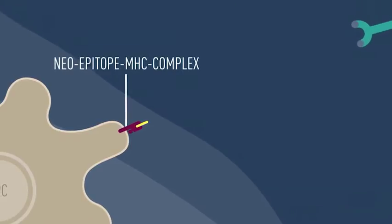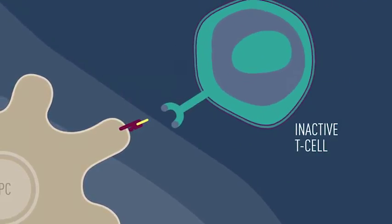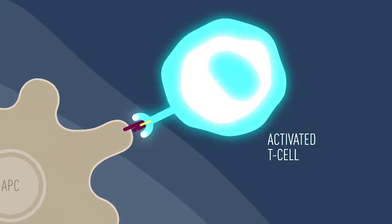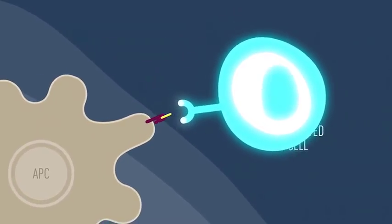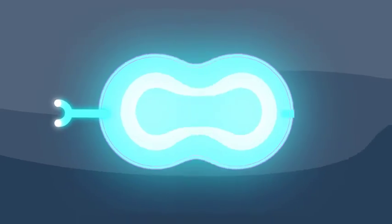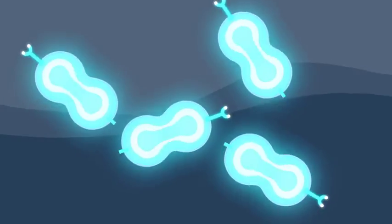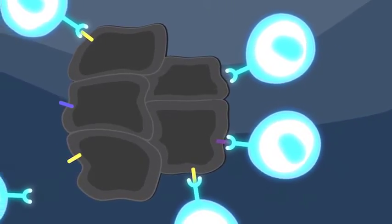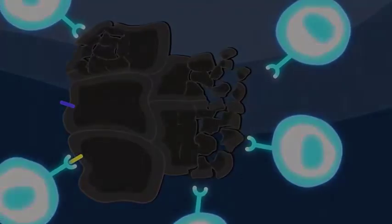The neoepitope MHC complex, recognized by T cells, triggers antigen-specific T cells to become activated. These activated T cells mature to become cytotoxic T cells, which multiply and find cells carrying the neoepitopes and destroy them. The technology is also designed to neutralize tumor-protective mechanisms.